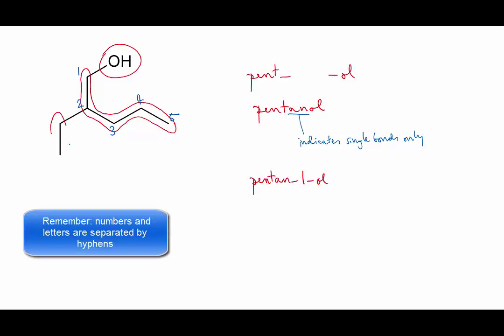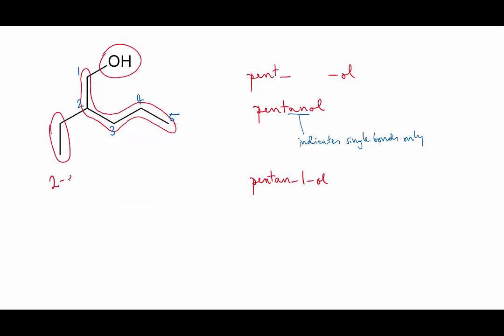And the substituent is a two carbon chain, so it's called ethyl, and it's on carbon number two. So the complete name is 2-ethyl-pentan-1-ol.